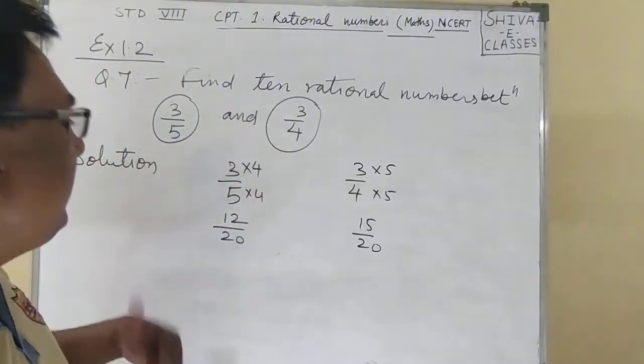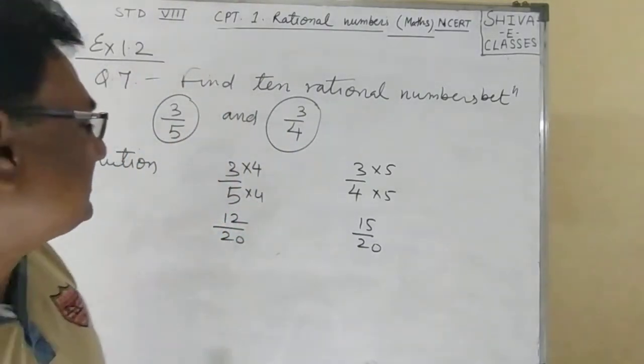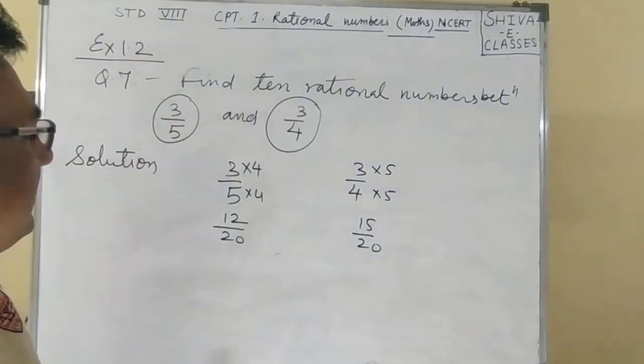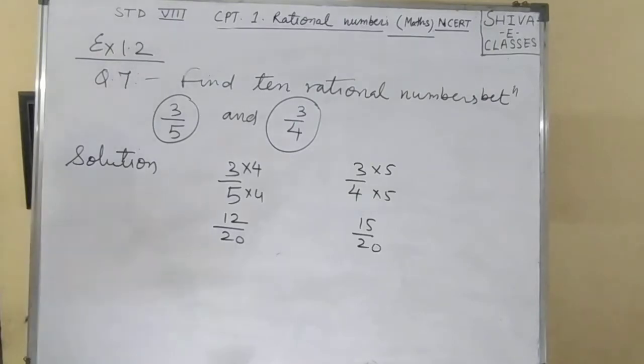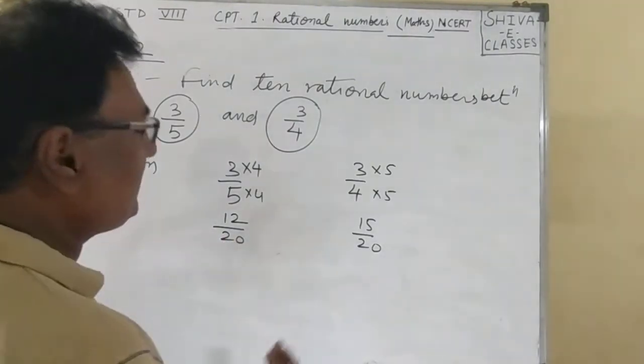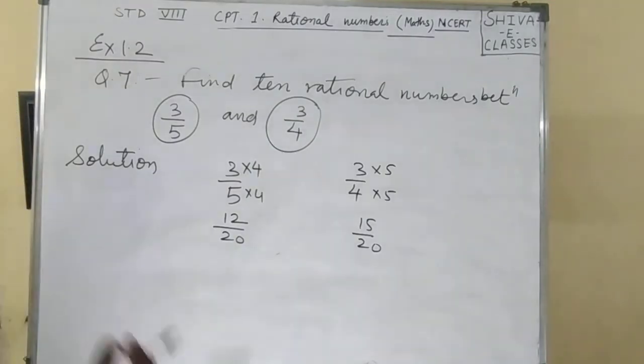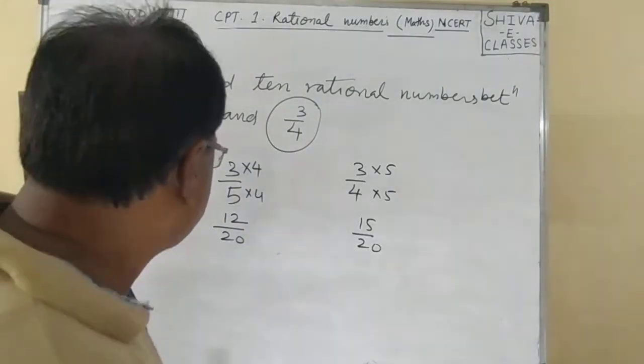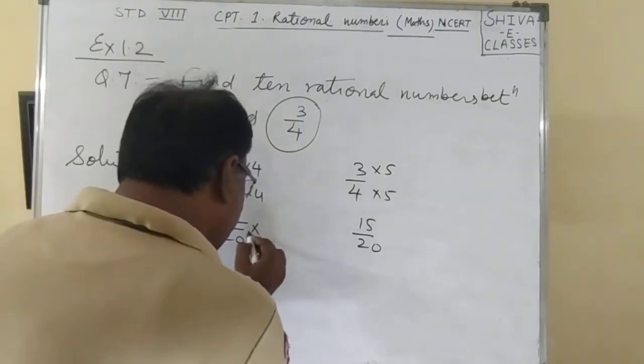12 and 15 have a difference of 2. We need to multiply the denominators again. Multiply 5 into 5. If we multiply 5 into 5, then we can get more numbers between them.